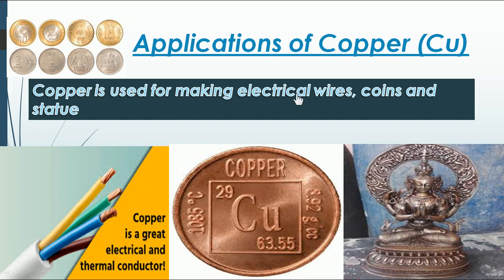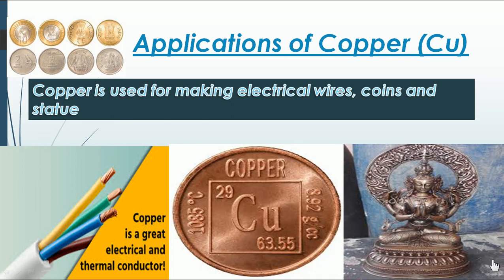Copper is used for making electrical wires for home/domestic purposes. Copper is a very good conductor of heat as well as electricity, so for domestic purposes we use copper wires. As a coinage metal we can make coins and decorative items or statues. By mixing copper and zinc we can prepare an alloy called brass, and with that we can make statues. Even copper itself can be used to make statues.